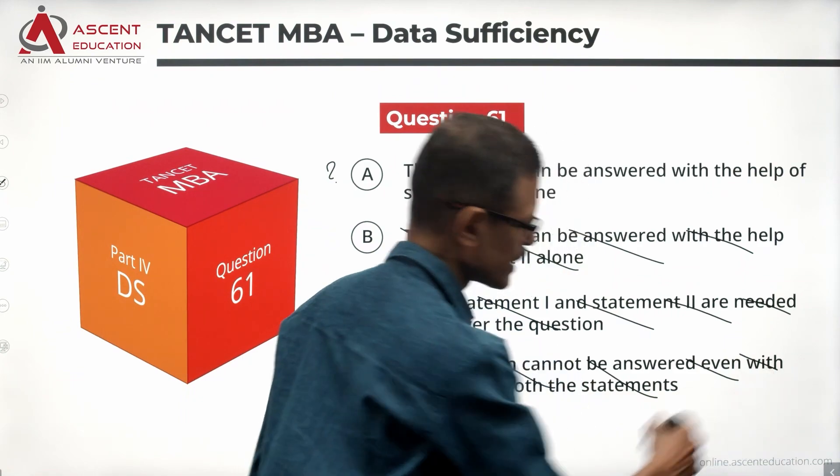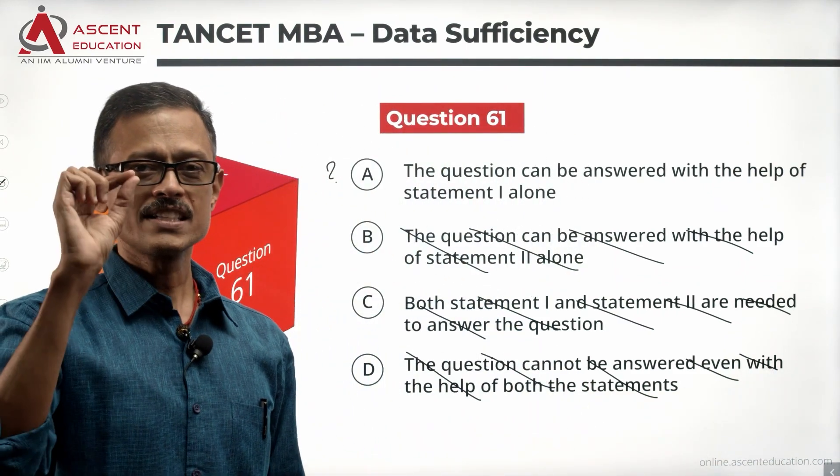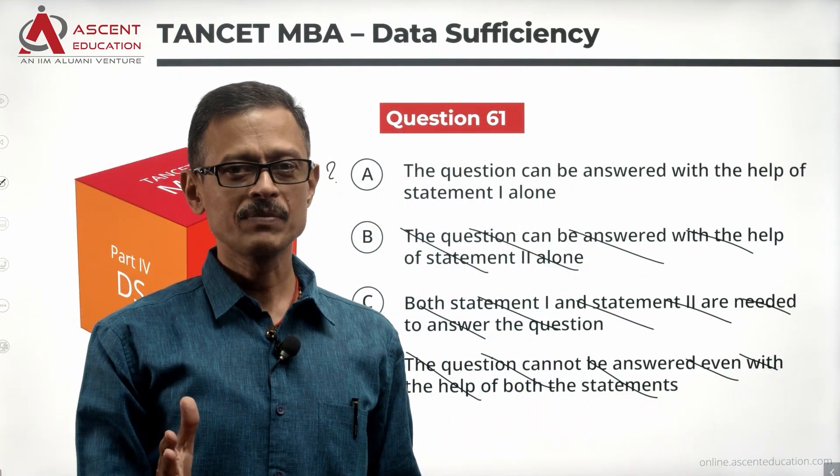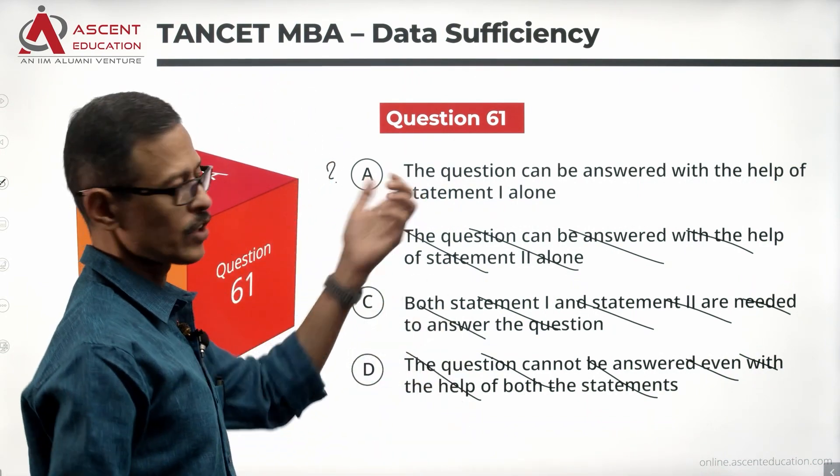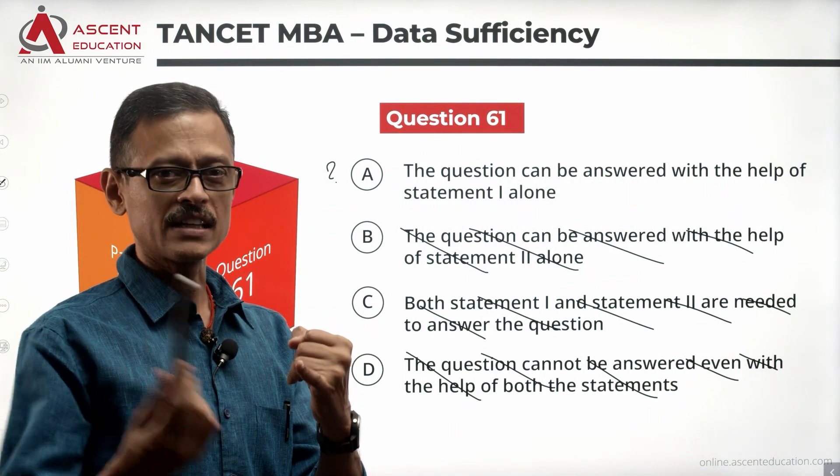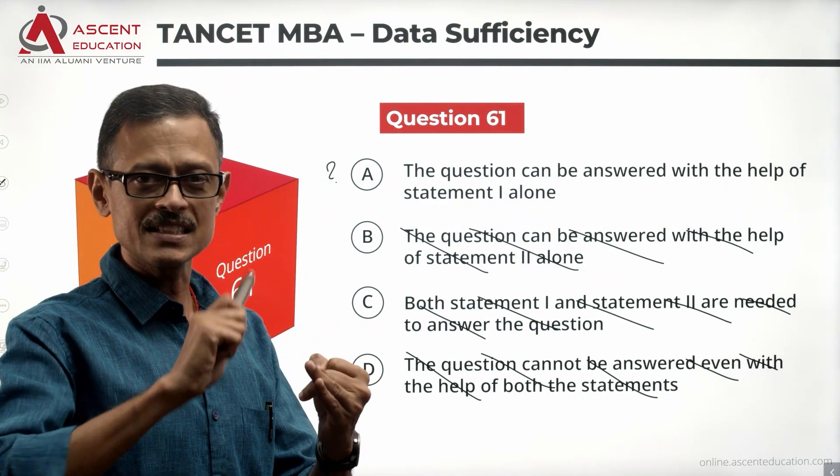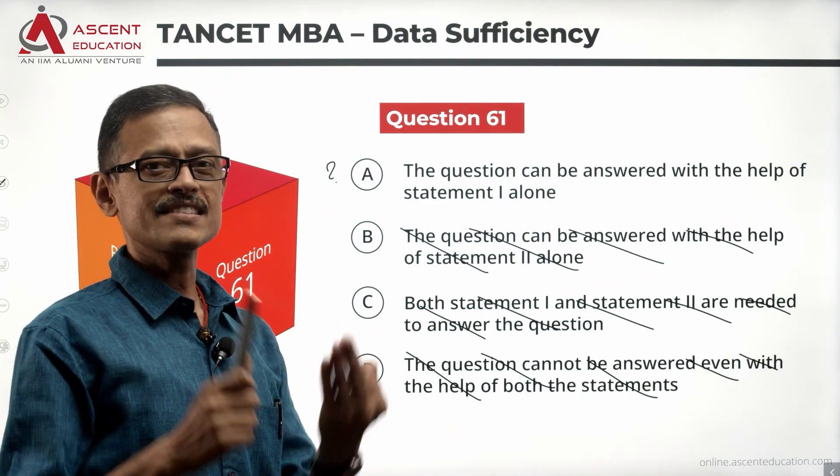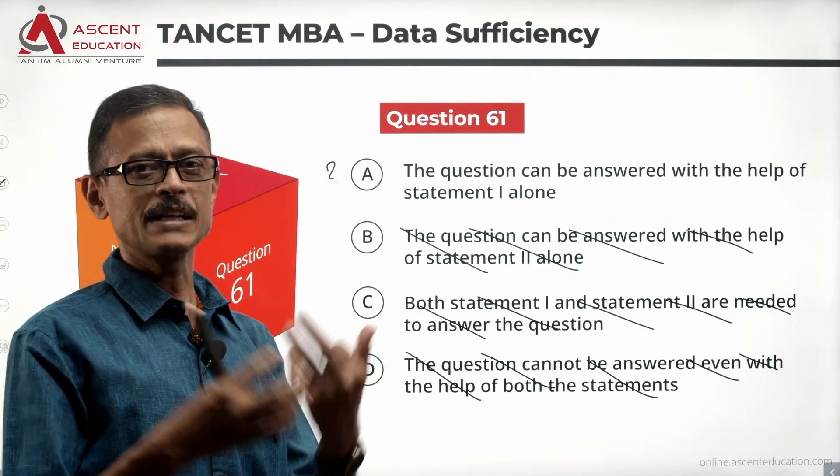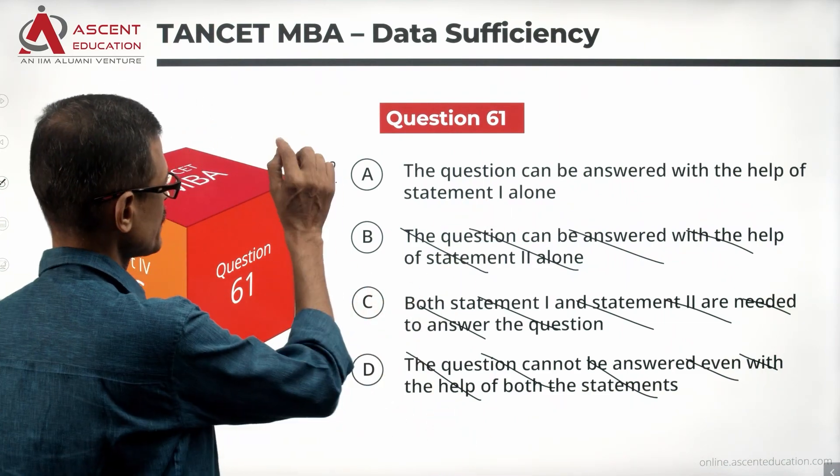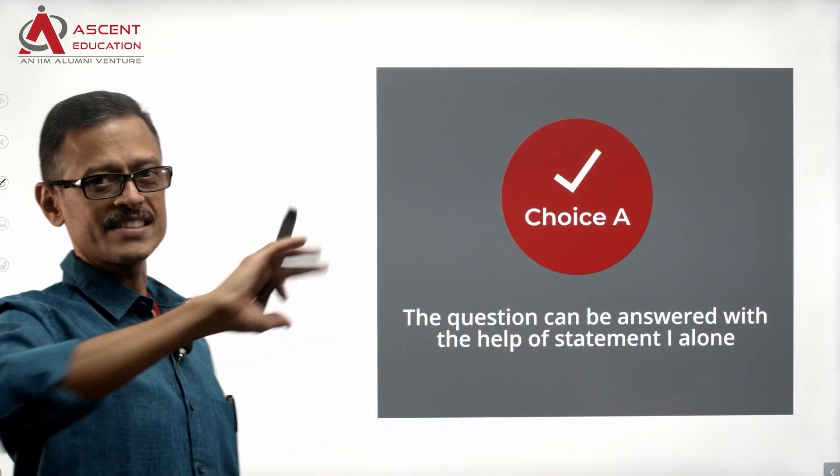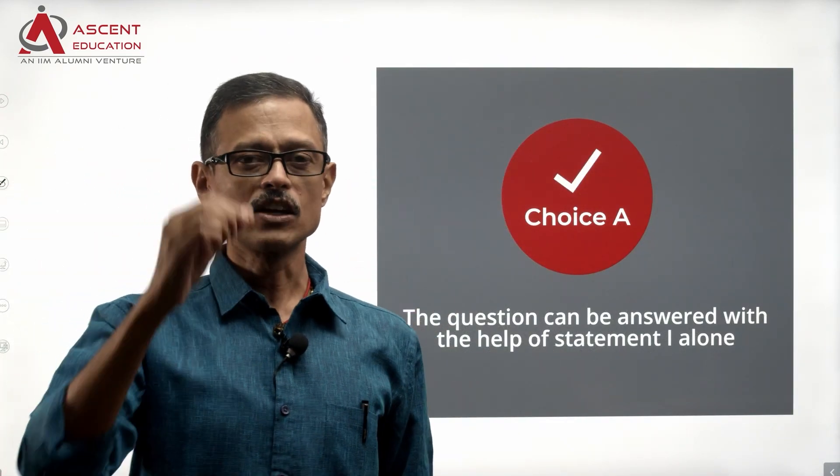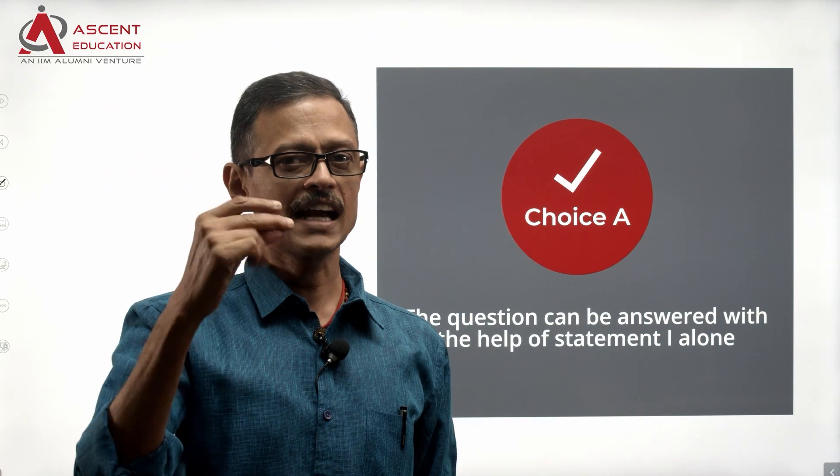In this version of answer options, statement 1 sufficient means you don't even have to take a look at statement 2. 1 is sufficient, answer option is A. Because B says 2 alone which means 1 is not, C says you need both, we have 1 is sufficient so we don't need both, D says the data is not sufficient. 1 is sufficient, so how can data be not sufficient? So statement 1 is sufficient, answer option is A. Don't waste time looking at statement 2.